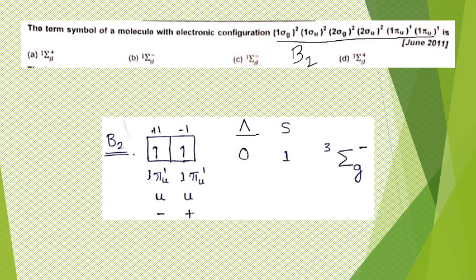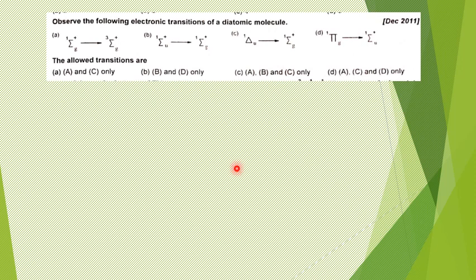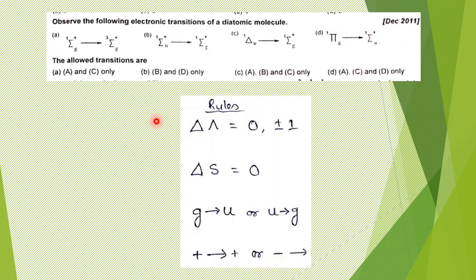The second question is about electronic transitions of a diatomic molecule, based on selection rules. If we know the selection rules we can answer very easily. First, you can readily eliminate a singlet-to-triplet transition, which is not allowed — spin multiplicity cannot change. So transition A is not allowed.